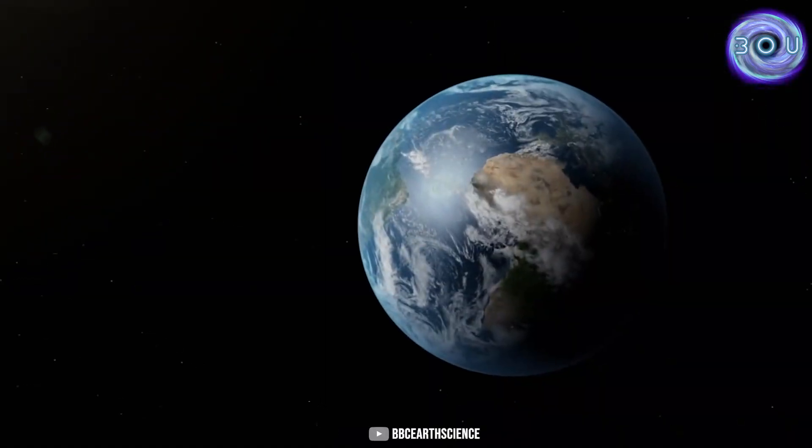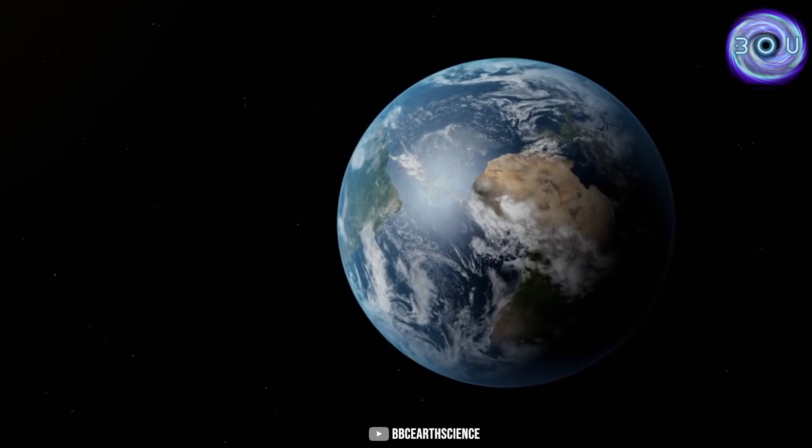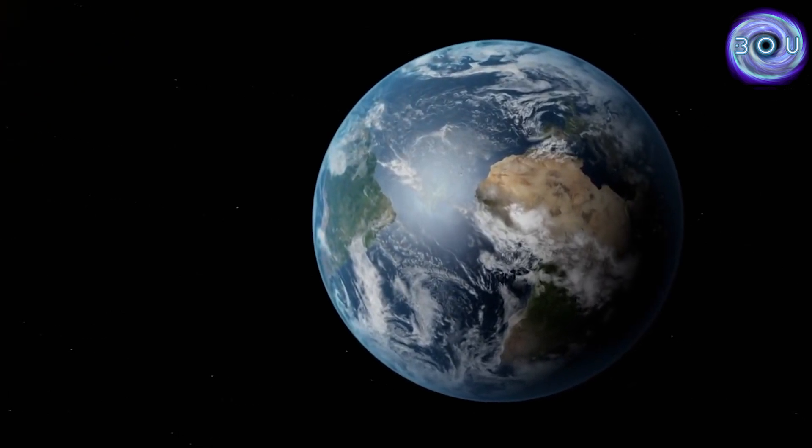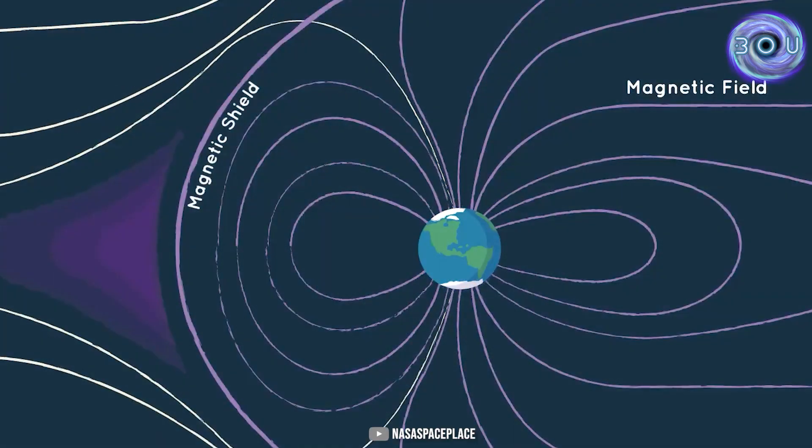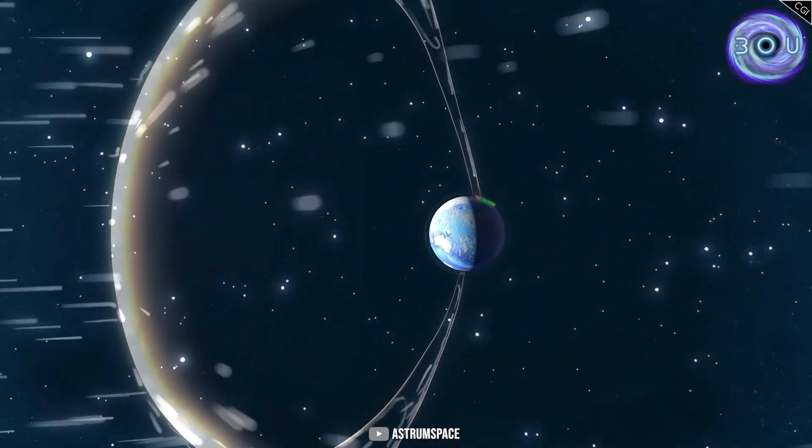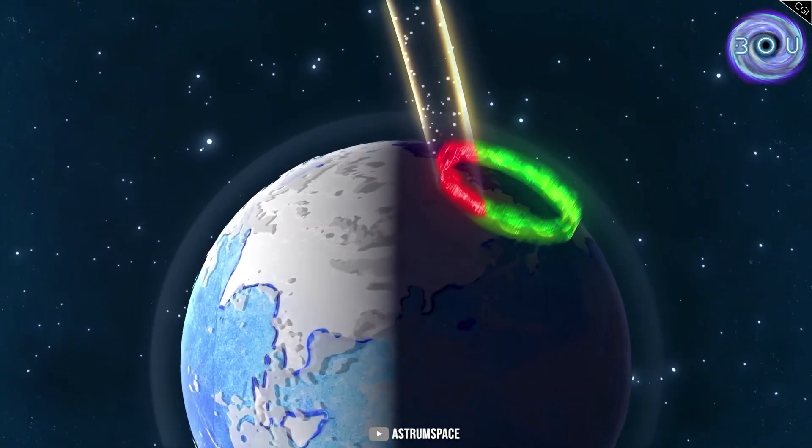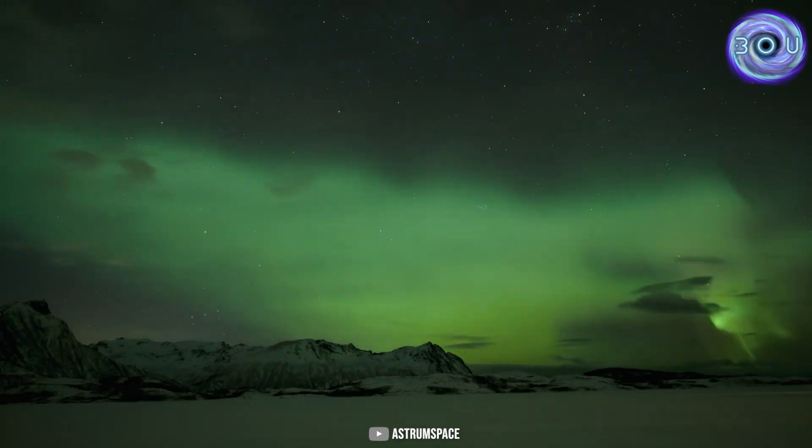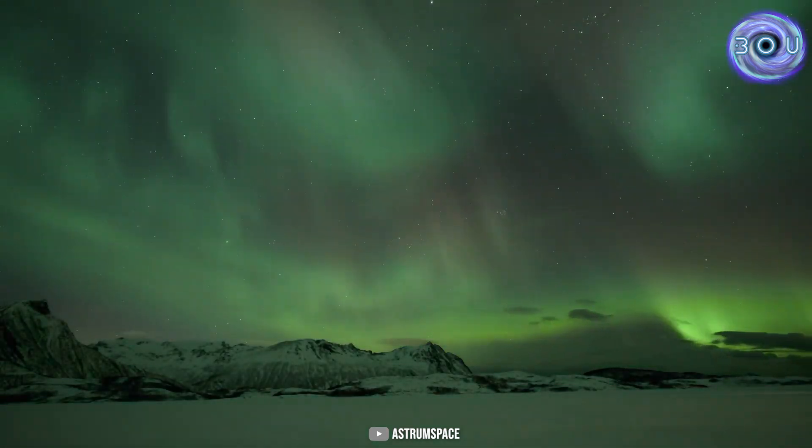Interestingly, all compasses also operate based on this property of the Earth. When a charged particle encounters the magnetic field of the Earth, it is directed towards one of the Earth's poles based on its charge. This prevents it from entering Earth's atmosphere. However, since these energetic particles collide with molecules in the Earth's atmosphere, they cause them to ionize and emit light, creating the auroras.